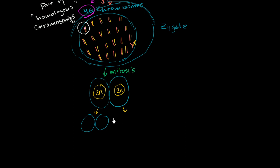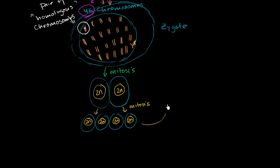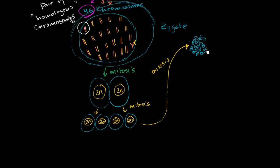Through mitosis, these cells just keep duplicating themselves, and each of these cells have the full contingency — 2n, the diploid number of chromosomes, which in this case is 46 for a human being. So mitosis is just going to keep happening, and eventually you're going to have thousands, then millions and tens of millions of these cells, each with 46 chromosomes.